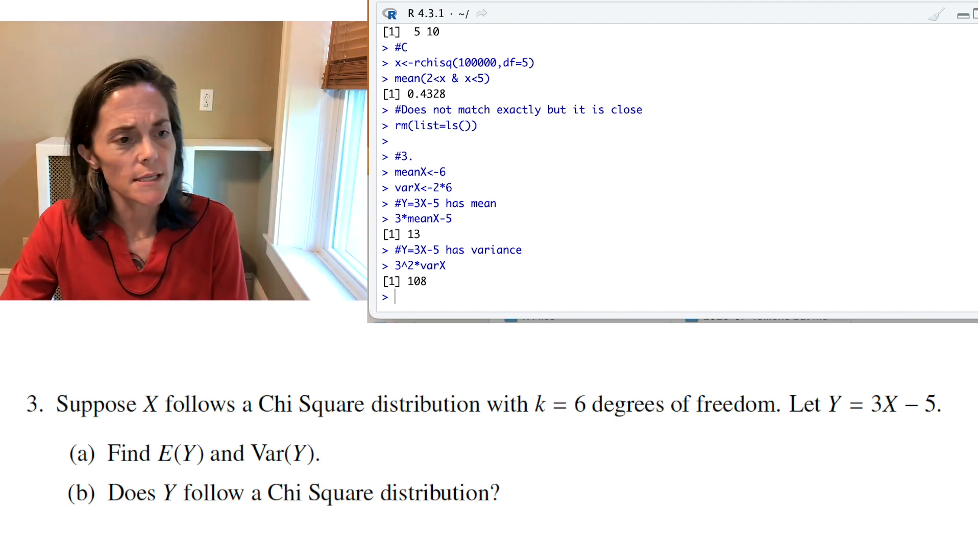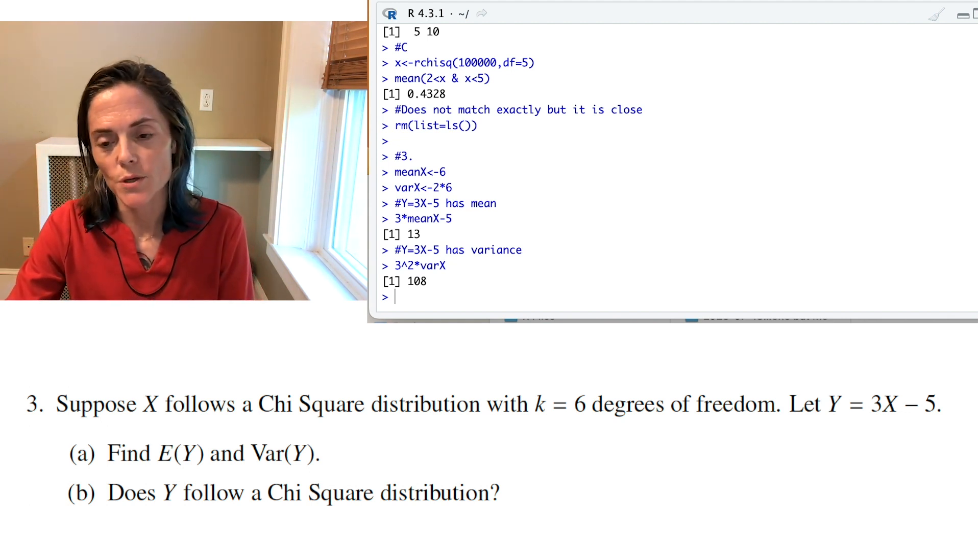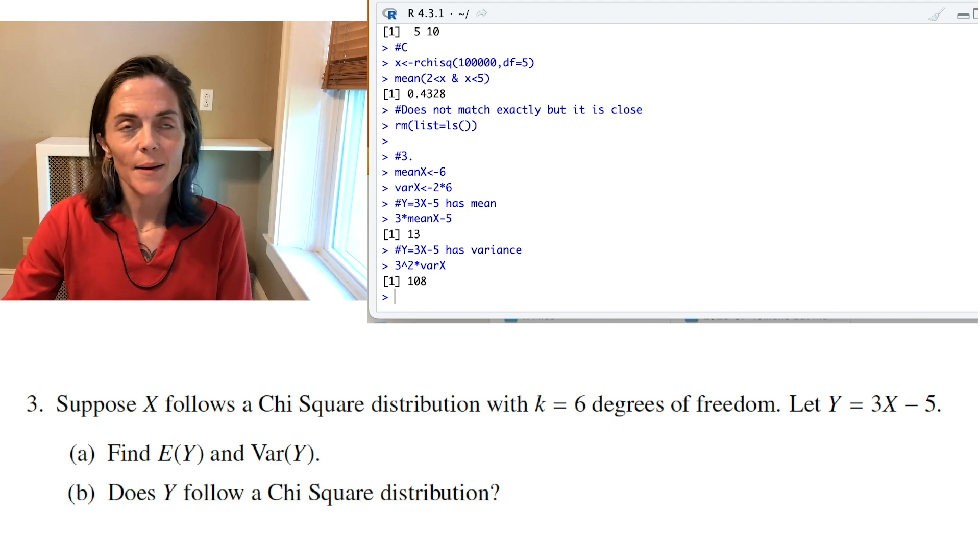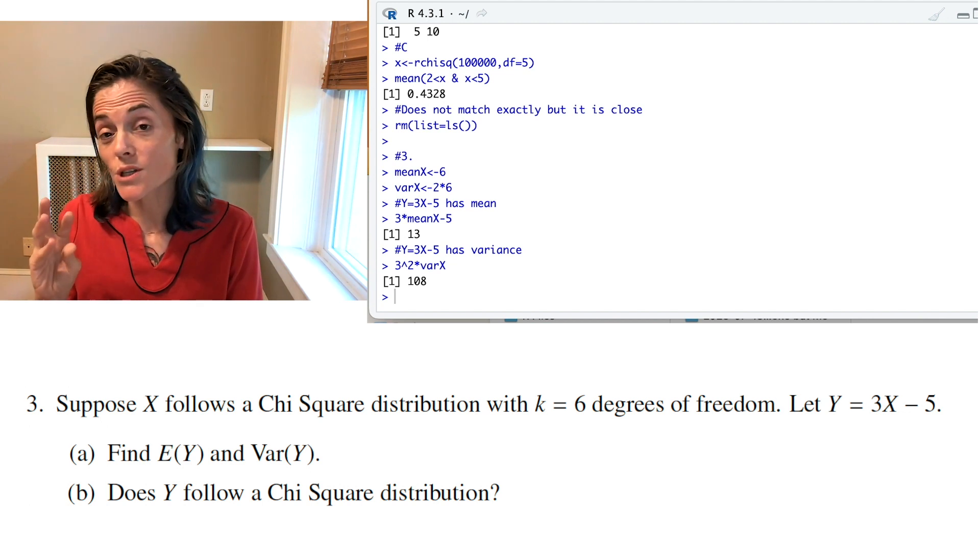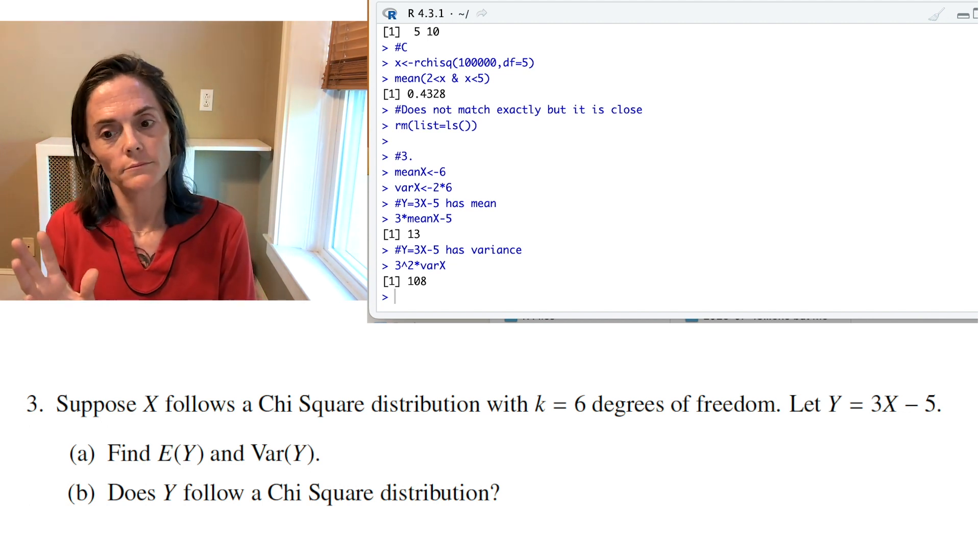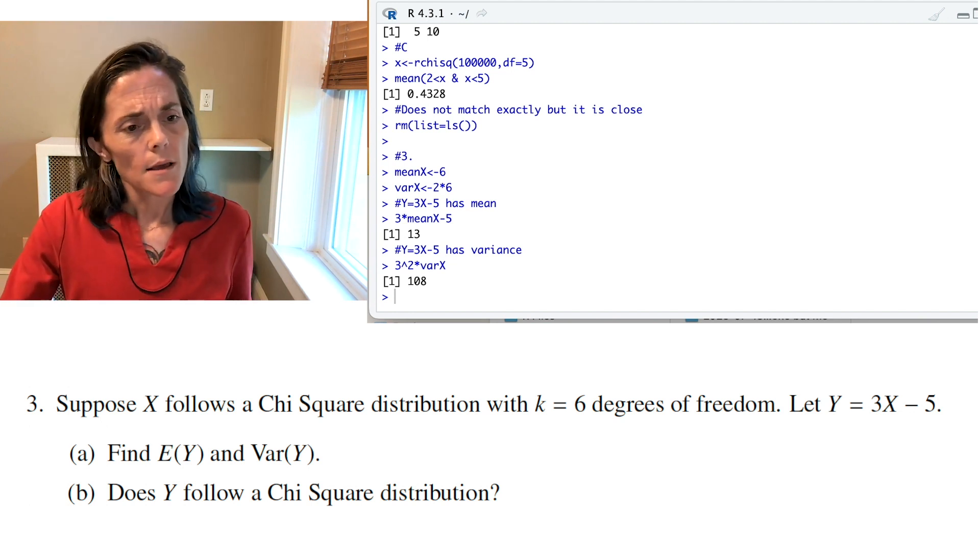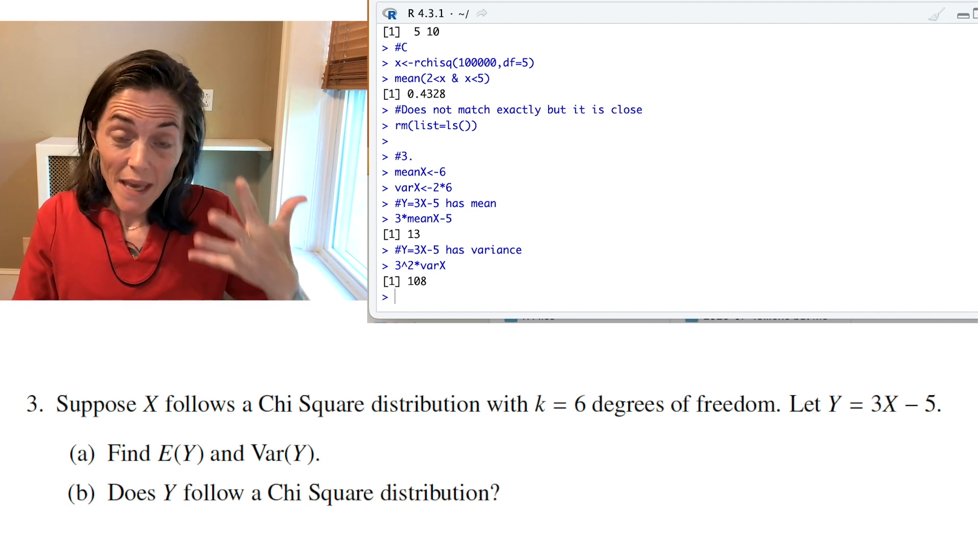So, the next question, letter C, letter B, does Y follow a chi-square distribution? Well, there's a lot of ways we can answer this. We discussed, just as a comment, if you have a normal distribution and you take a linear transformation, it remains normal. But that's generally not the case for all distributions. So, here, just thinking about mean and variance, we can answer this.